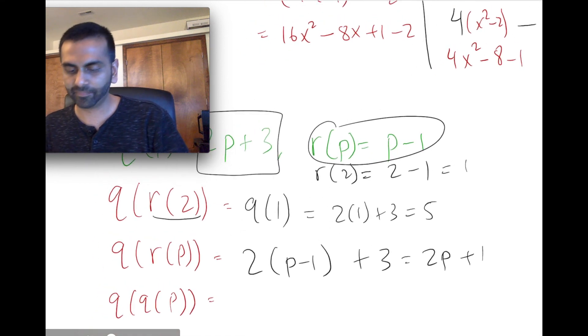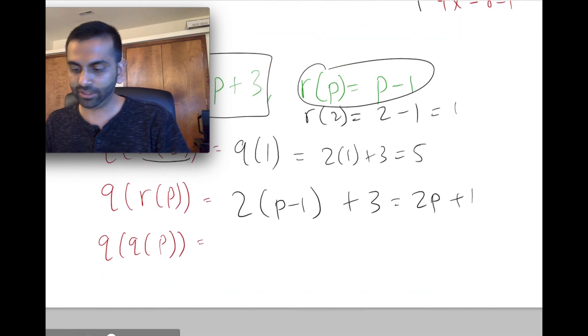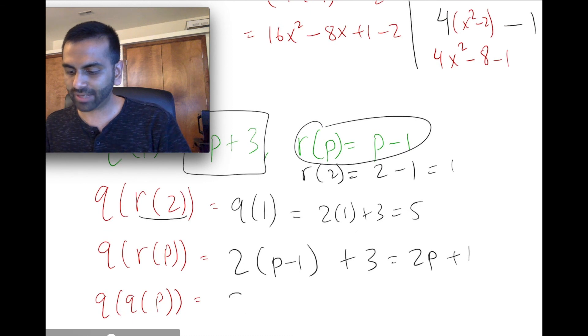So really, q of q of p is saying, into q of p, q of p is 2 times whatever the input is plus 3. But the input itself is q of p, which we know is 2p plus 3.